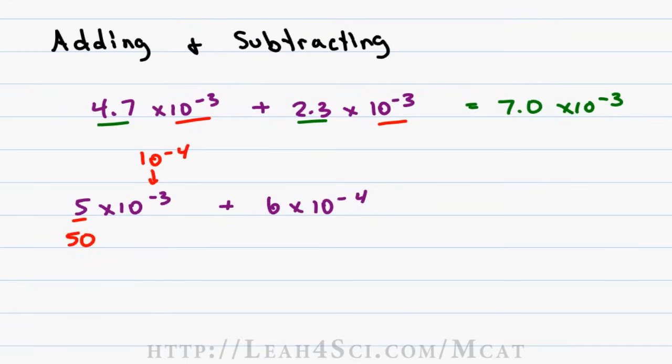Changing 5 times 10 to the minus 3 to be 50 times 10 to the minus 4 has the same exact value. Now that I have 50 times 10 to the minus 4, I can add that to 6 times 10 to the minus 4 because they have the same power. 50 plus 6 is 56 and we still keep 10 to the minus 4.